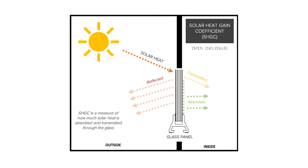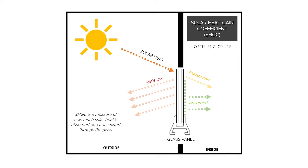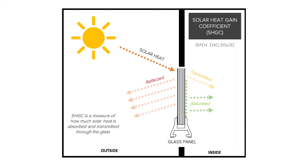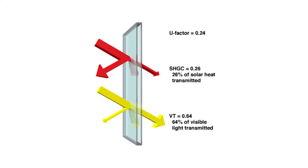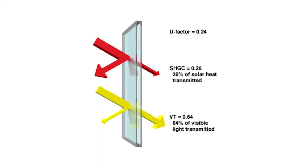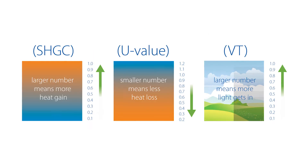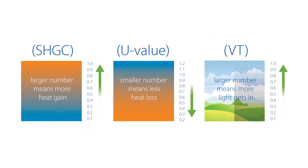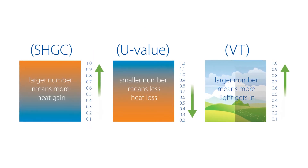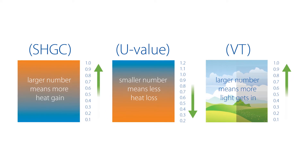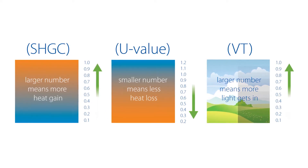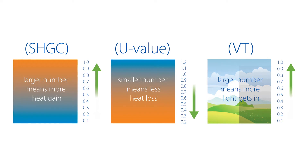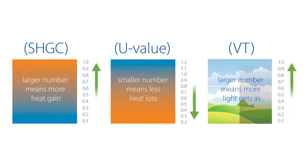SHGC stands for solar heat gain coefficient and is a measure of how much solar heat will pass through the window. This is different from VT, or visible transmittance, which is a measure of how much light will pass through the window. Again, different coatings on the glass will allow for higher or lower SHGC values. In a colder climate, you want windows with a higher SHGC, and in warmer climates, you will want a lower SHGC.